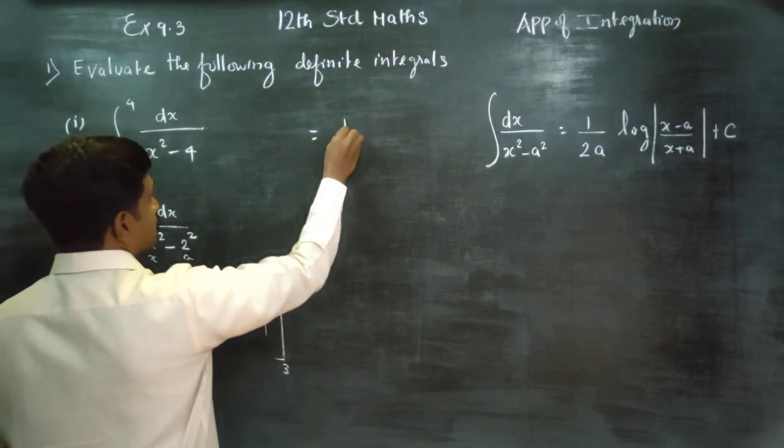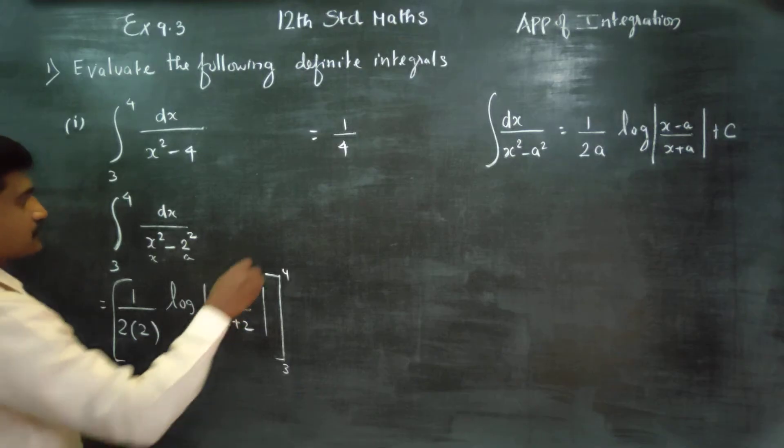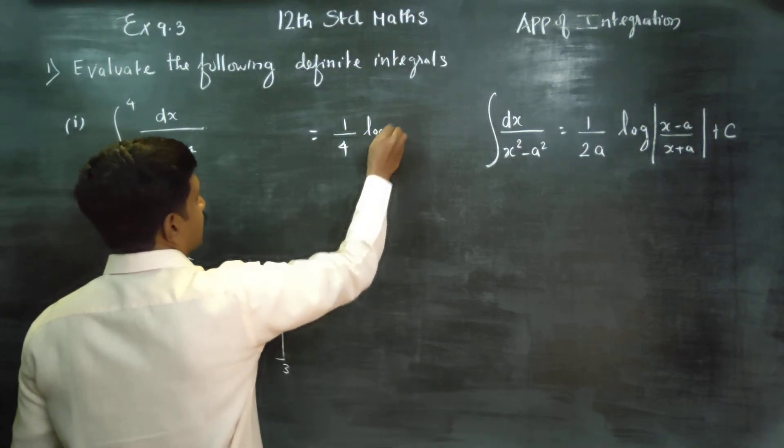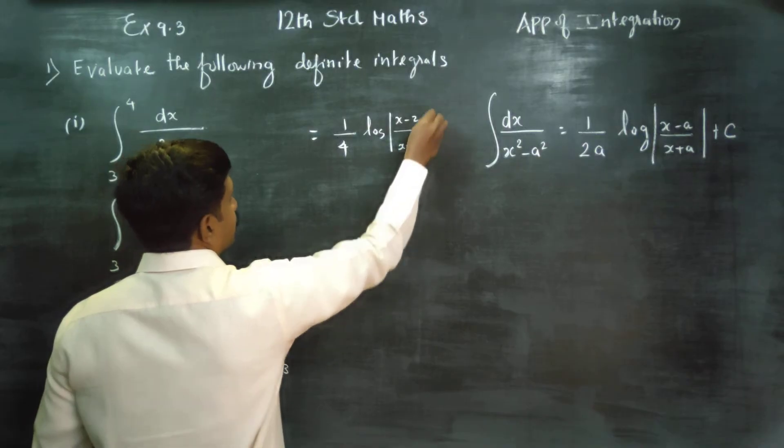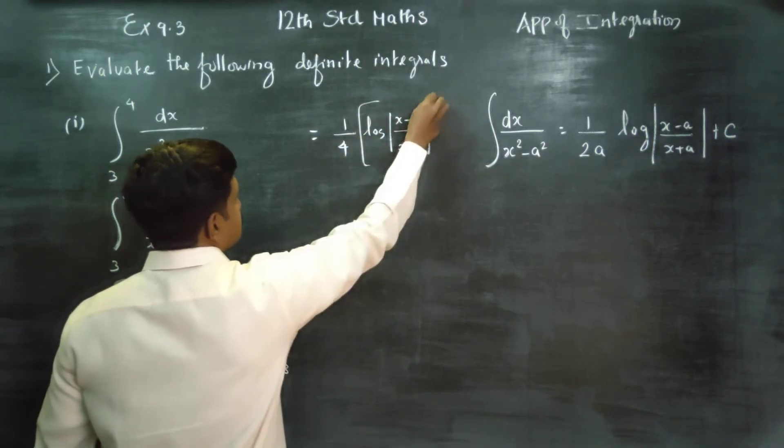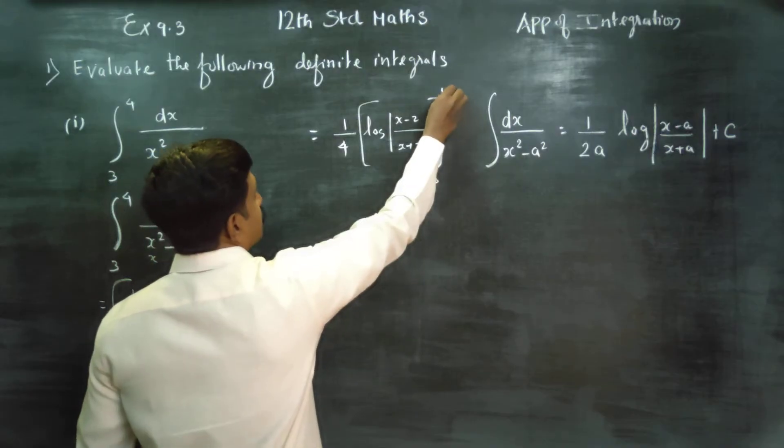Next stage, 1 by 4 logarithm of x minus 2 by x plus 2, limits 3 to 4.